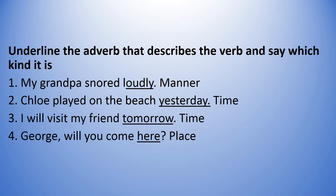Number 4: George, will you come here? The verb is 'come' and you ask 'where'. You are asking where I should come, and you get the answer 'here'. So that is adverb of place.